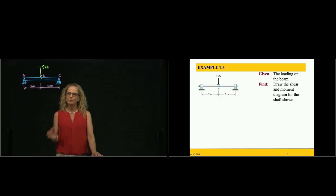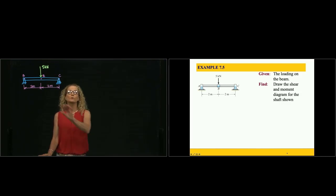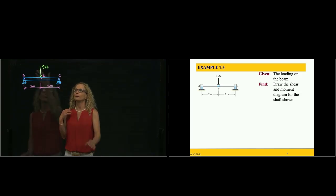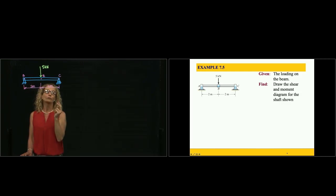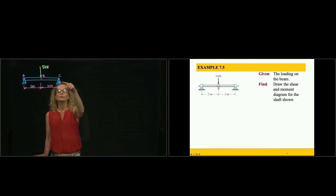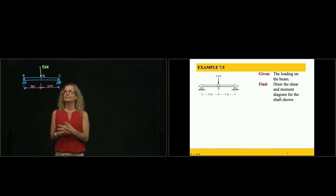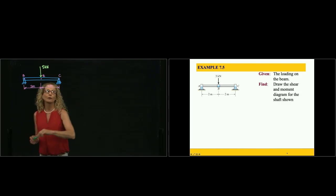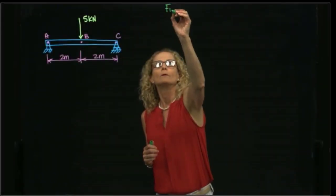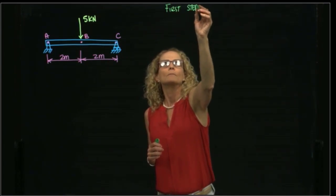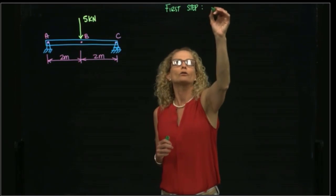This is problem 7.5 and we are now calculating the internal forces for the whole beam. We have a beam that is attached with a truss bearing, which restricts two displacements in the y direction and in the x direction. Then we have a normal bearing that only restricts motion in the y direction. And then we have a force applied at the middle of the beam, which is 5 kN. The first step always is external reactions.